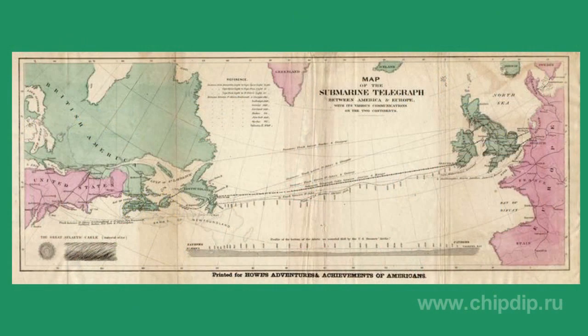The second cable was laid in 1865, but there was a cable breakdown and the work came to nothing. But eventually, the following year everything went fine and communication was established. Later, the second previously broken cable was found and laid to Canada too. By the end of the 19th century, already 15 cable junctions had been laid.